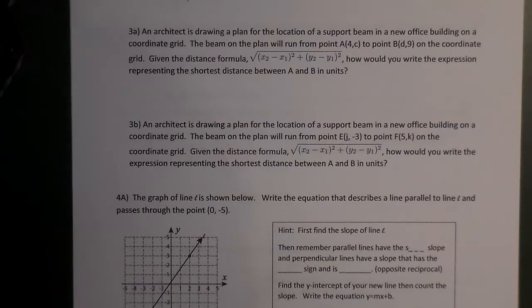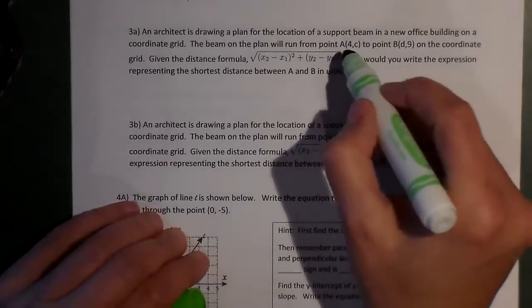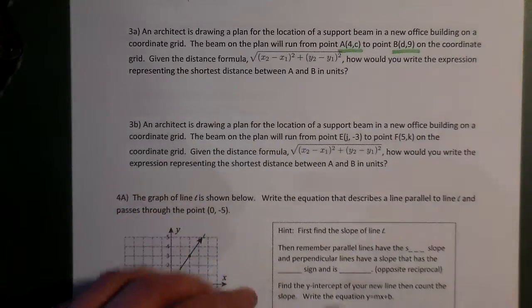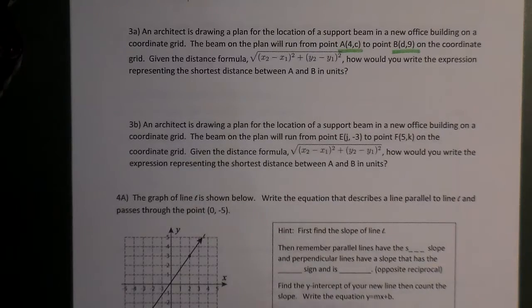We're going to look at another example of distance on this third question. It says an architect is drawing a plan for the location of a support beam in a new office building on a coordinate grid. The beam will run from this point to this point. Let's locate our points here. I've got A and B on the coordinate grid. Given the distance formula, how would you write the expression representing the shortest distance between A and B in units?